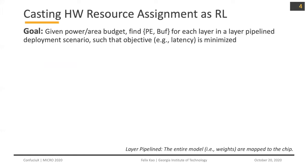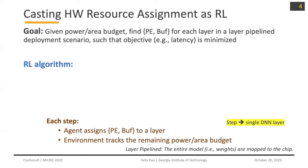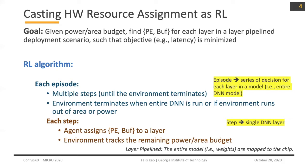Now let's look at how we cast the hardware resource assignment into an RL problem. In an RL algorithm, you will have steps. In each step, an agent will assign a PE buffer to a layer. An environment will track the remaining power and area budget. In each episode, it will run multiple steps until the environment terminates — either when the entire DNN is run or the environment runs out of area or power. An episode is a series of decisions for each layer in a model.